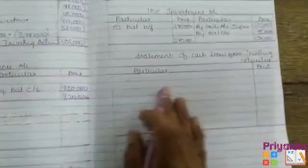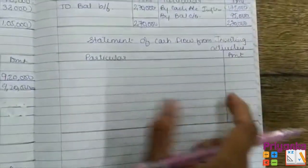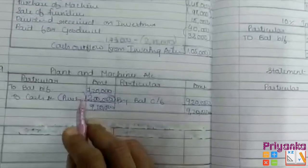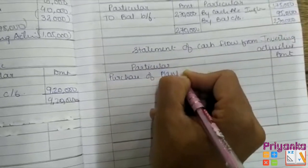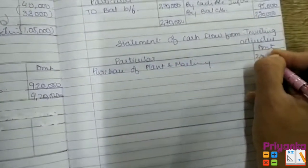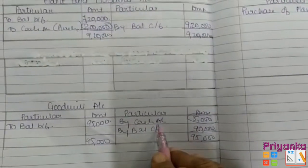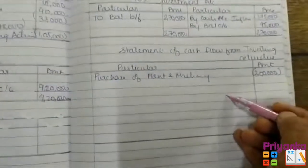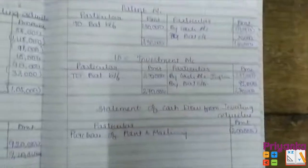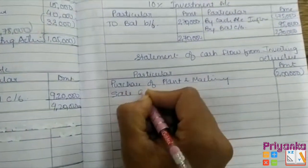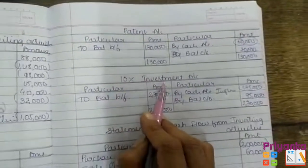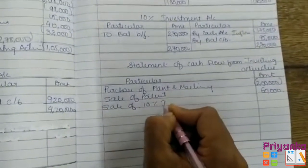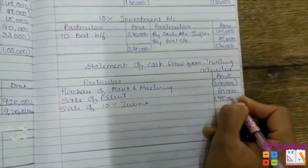Now I will show you how to put the entry for the statement of cash flow from investing activity. First, get ready with this specimen. We found the purchase of plant and machinery — the difference is 2,00,000, which shows a cash outflow, so put it in brackets. Next, goodwill shows a difference of 5,000 — it is an intangible asset, so we are not going to count it in investing activity. Next is patent, where the difference of 60,000 shows sale of patent, that is 60,000. Then, sale of 10% investment — the difference found is 1,75,000, which will be shown as an inflow.